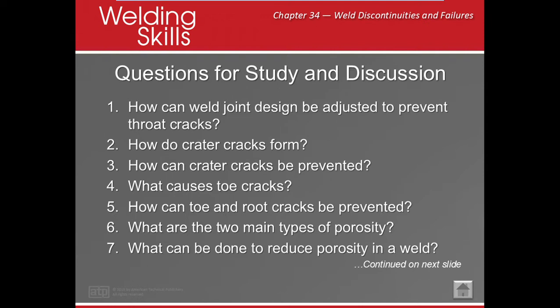How can weld joint design be adjusted to prevent throat cracks? Throat cracks are prevented by using joint designs that reduce joint restraint and excessive stresses when the weld metal solidifies. Groove weld dimensions can be adjusted to allow deposition of a sufficient amount of filler metal to overcome excessive joint restraint. Welding process variables may be adjusted to change weld bead size for the joint thickness, have sufficient heat input, and travel speed to prevent excessive stresses when it solidifies.